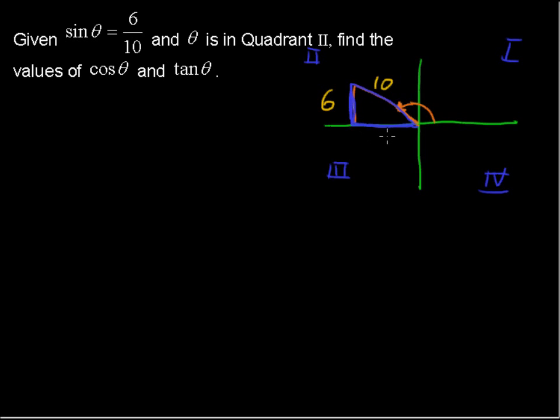So now we have to find this second leg, or the other side, the third side of the triangle. Well, we can find this with Pythagorean Theorem. a squared plus b squared equals c squared.